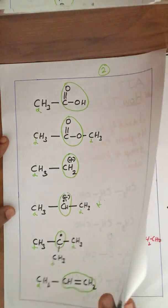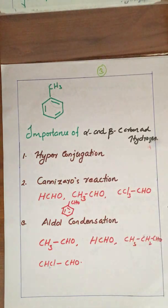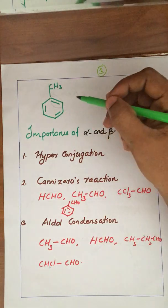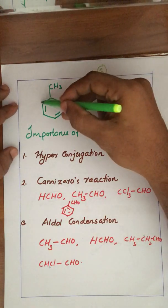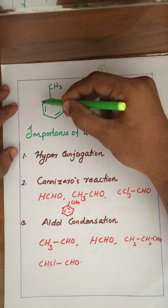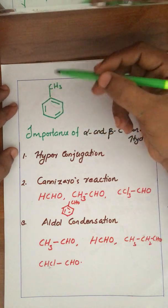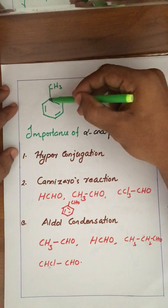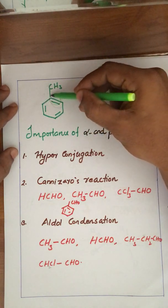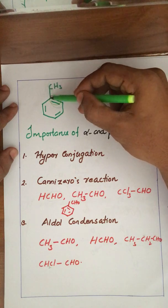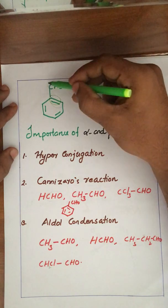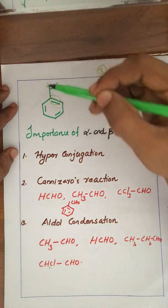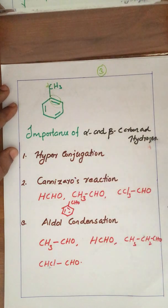In this molecule, benzene is the most important group, or the double bond is the most important group. The carbon attached to this double bond or benzene ring is taken as the alpha carbon atom. Now let us look at what are the importances of alpha and beta carbon atoms and alpha and beta hydrogen atoms in organic chemistry.